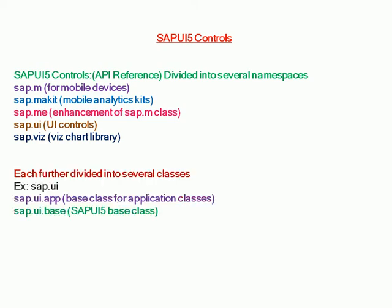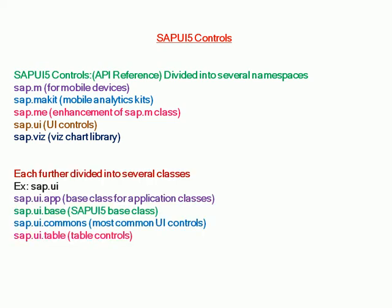Each namespace is further divided into several classes. For example, if we take sap.ui, it is further divided into sap.ui.app, which is a base class for application classes, and sap.ui.table for table controls, and so on.